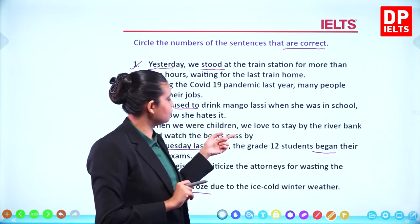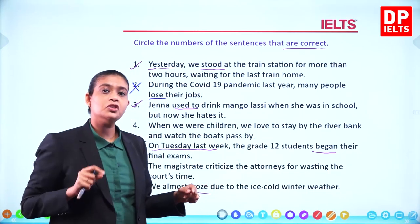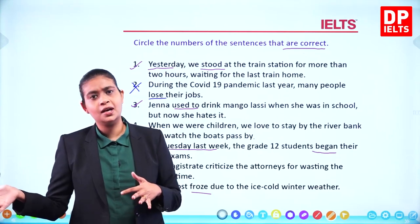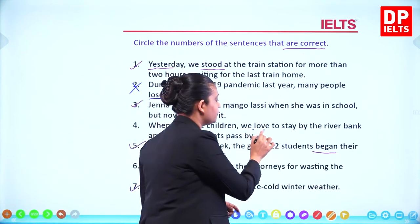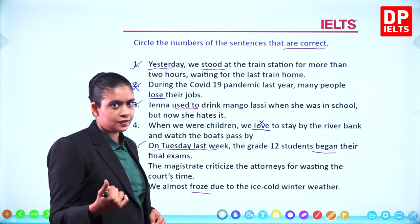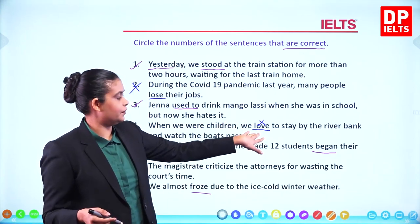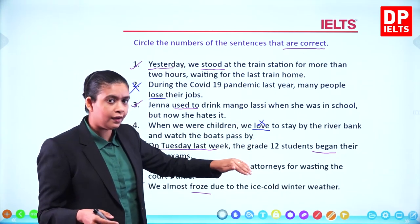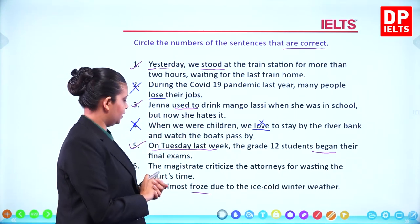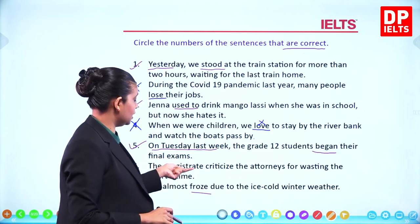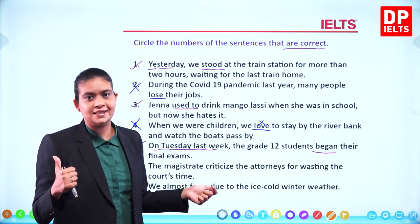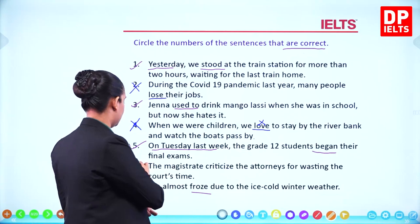Sentence four: 'When we were children we loved to stay by the river bank and watch the boats pass by.' When we were children refers to something in the past — you cannot say 'we love.' It should be 'we loved.' Because the D form is not there, sentence four is wrong. Sentence six: 'The magistrate criticized the attorneys' — you cannot say 'criticize' if it happened in the past, so sentence six is also wrong.